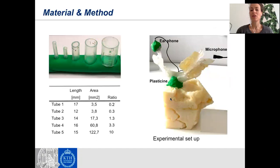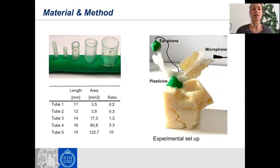This was the experimental setup. Here you can see the nasal tract — the other way around — here's the nose, here's the hard palate, and this would be the velopharyngeal region. This is the vocal tract, tightly seated by means of plasticine. Here's an earphone which provides a sine sweep excitation that travels through the system and is picked up by a microphone at the lip opening. The velopharyngeal port is modulated with the length and the cross-sectional area and a ratio of area to length.